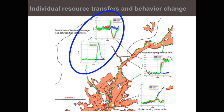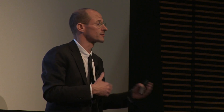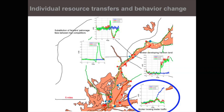Two brown power brokers on the top left have a substitution effect with regard to their power base: some of their patronage network is changing from one power broker to the other because the road project introduced different resource transfers and streams.